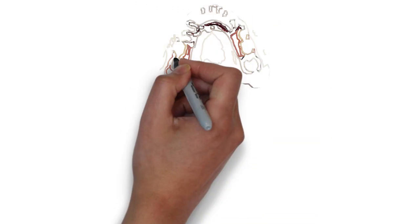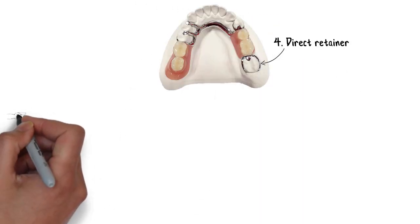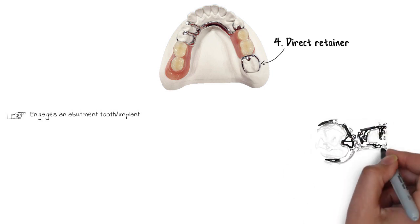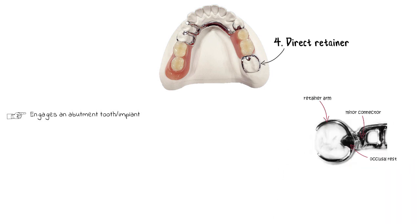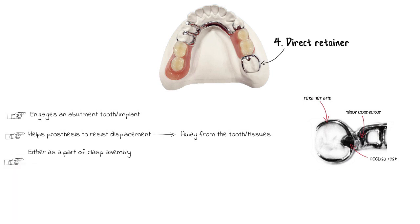Moving on, we have the direct retainers. A direct retainer is that part of the prosthesis that engages an abutment tooth, or in some cases an implant, and essentially helps the prosthesis to resist its displacement away from the tooth or the tissues. The direct retainers can either be a part of the clasp assembly along with other components, or they can be in the form of an attachment.